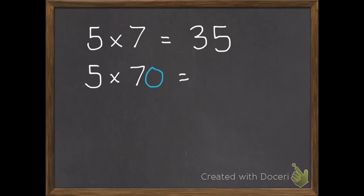So if I have five times seventy, I have the same basic fact, five times seven, and I just have an additional zero. So five times seven is thirty-five, and then I have my extra zero, so I add one zero.